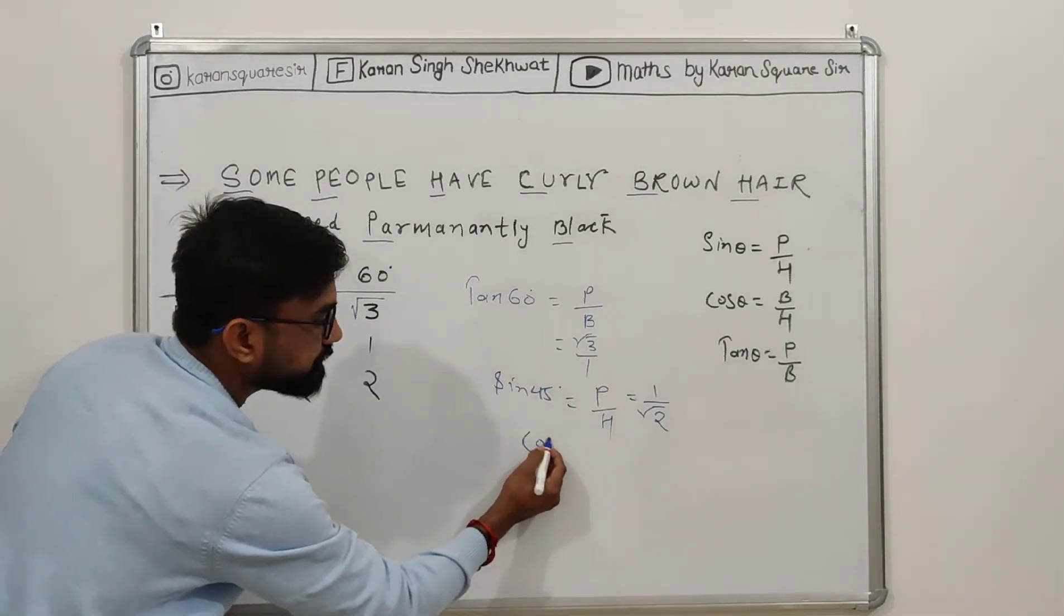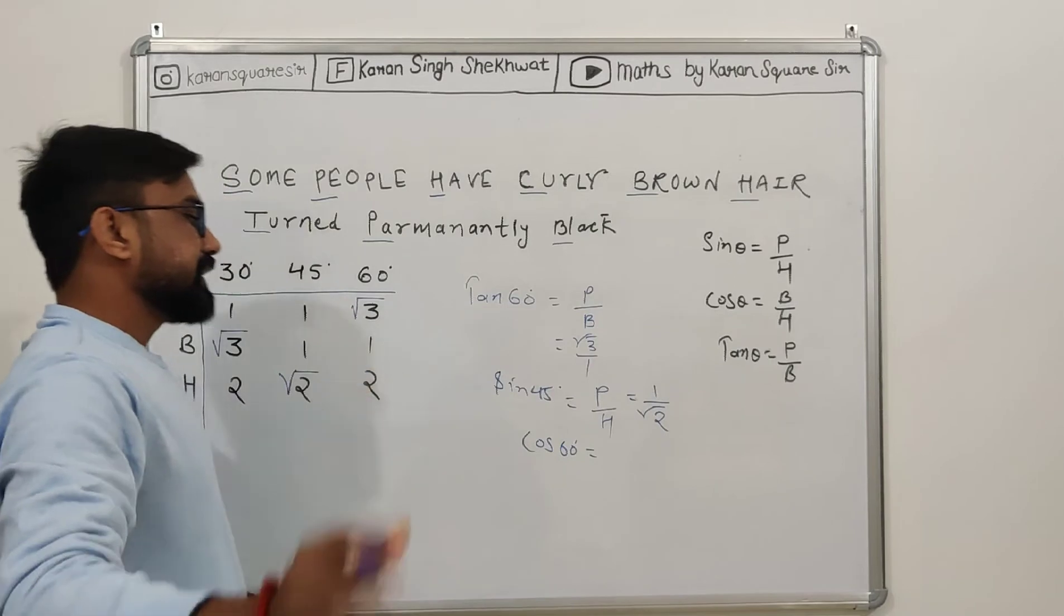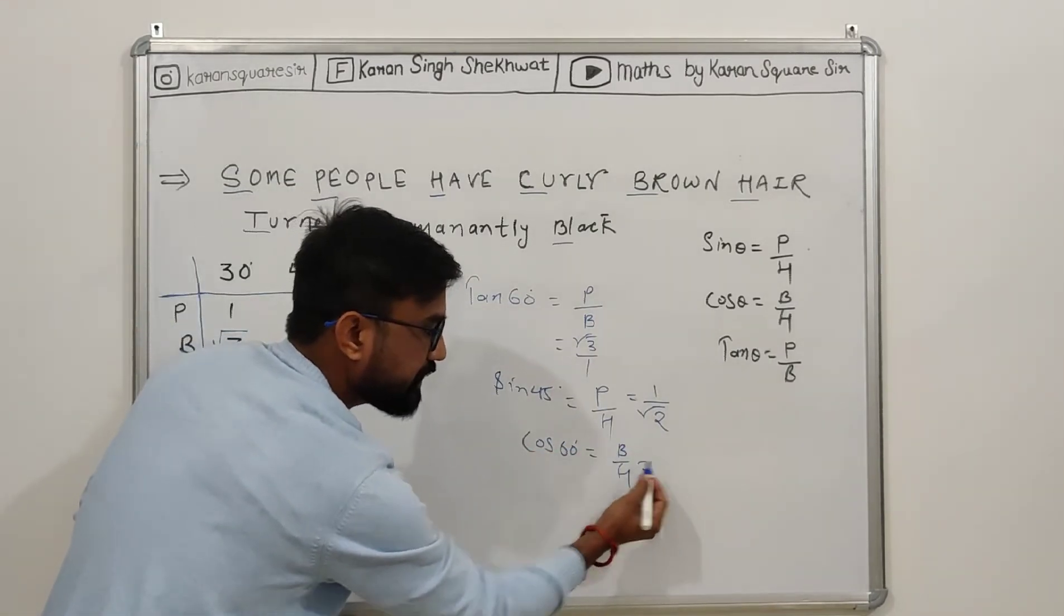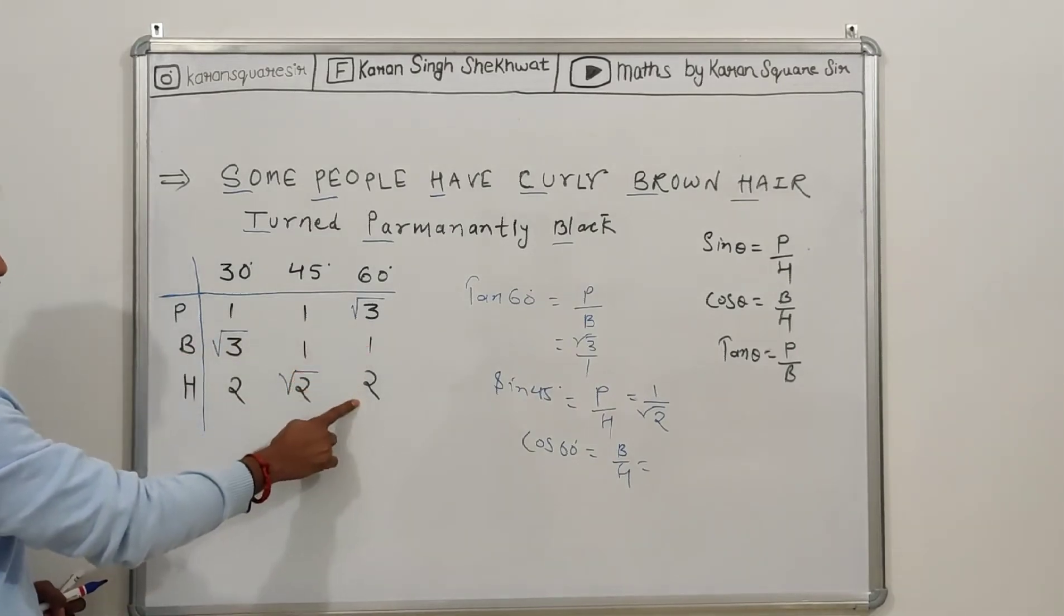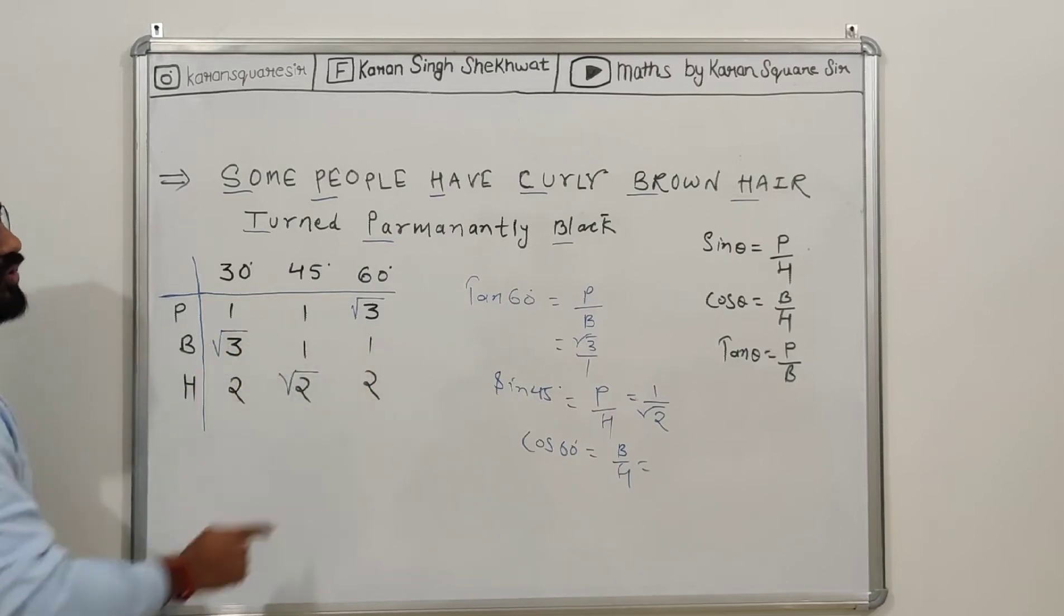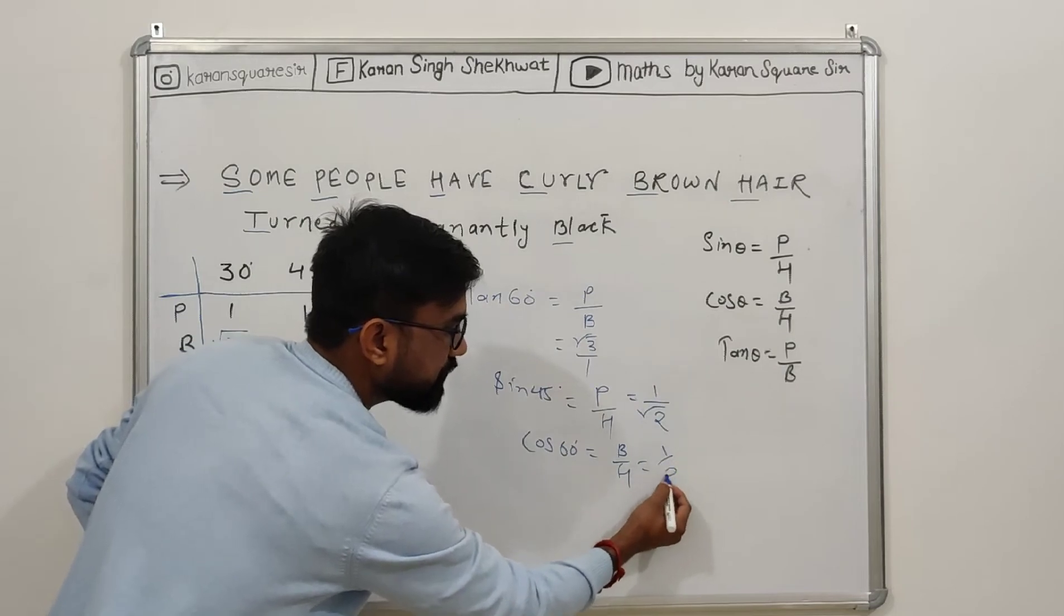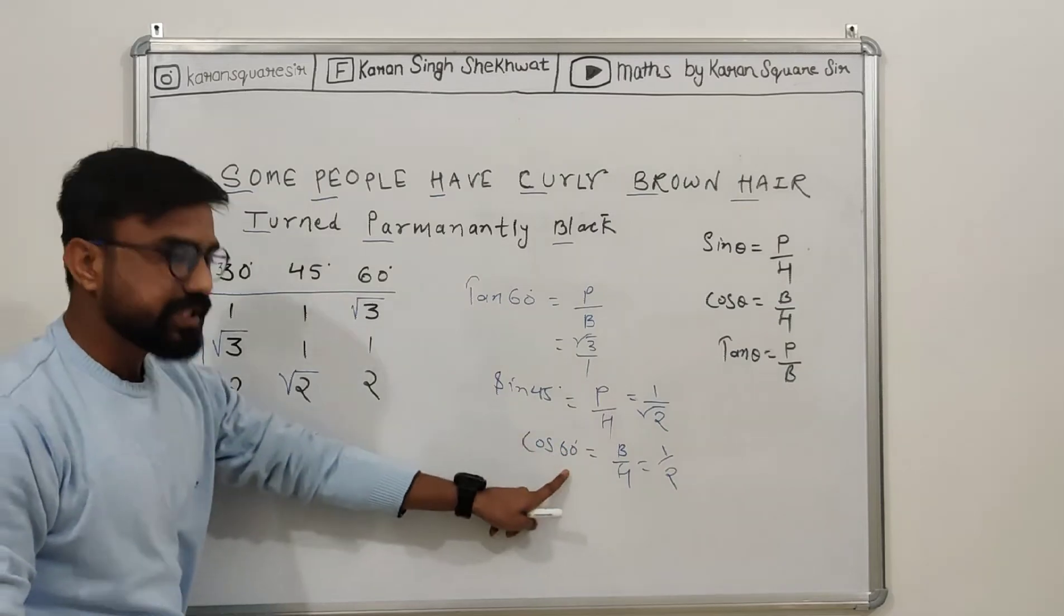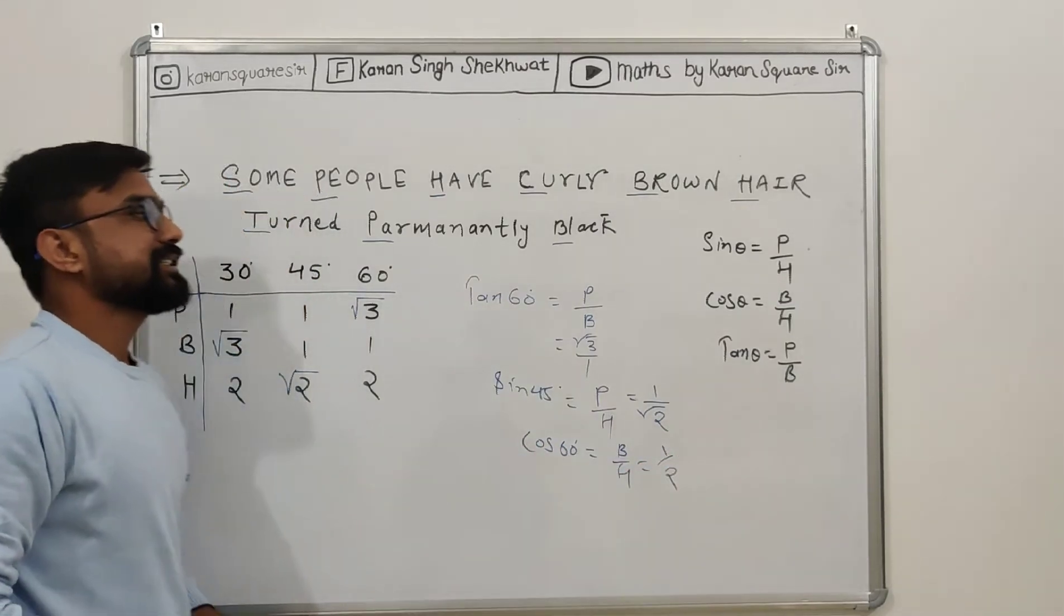Suppose you have to tell the cos 60 value. So the cos 60 value - cos is 'curly brown hair,' right? So 'brown hair,' 60 will be done here. So B is base 1 and hypotenuse 2, so here it is 1 upon 2, because base is 1 and hypotenuse is 2. So the value of cos 60 is just 1 upon 2.